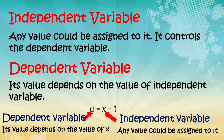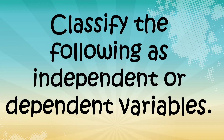So tatanda nyo: si x ang ating independent variable at si y ang ating dependent variable. Sa English, kapag independent variable — can stand alone. Kapag dependent — cannot stand alone. So let's classify the following as independent or dependent variables. Ang ginawa ko po ay pictures, so i-define natin kung sino yung independent tsaka dependent dun sa picture.